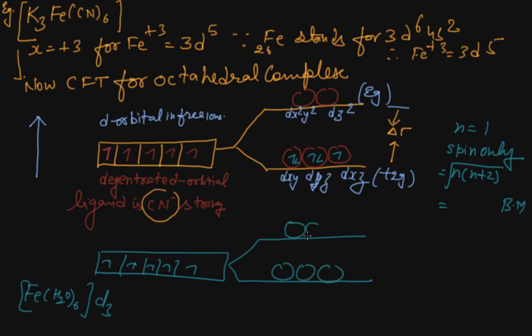Ligand is weak so it will not cause pairing. Five electrons are distributed this way: one, two, three, four, five. First all unpaired, then pairing starts. This is the splitting of energy in an octahedral coordination entity with six ligands.